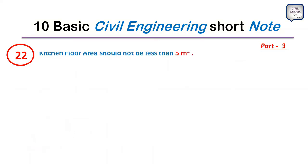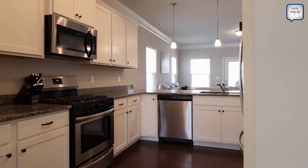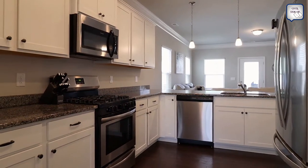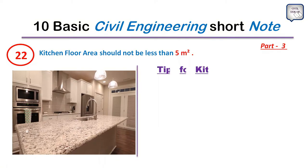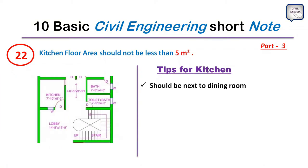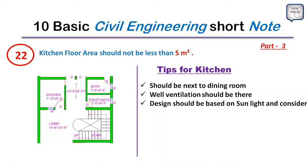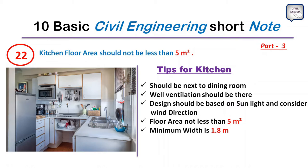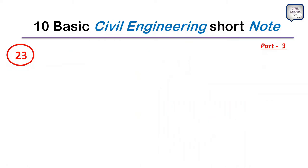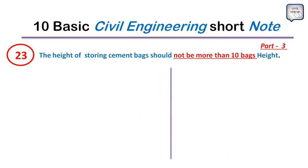Point 22: Kitchen floor area should not be less than 5 square meters. When designing a residential building floor plan, the kitchen should be adjacent to the dining room, have proper ventilation, consider sunlight and wind direction. The minimum width of the kitchen should not be less than 1.5 meters, and the door size should be 3 feet by 7 feet.